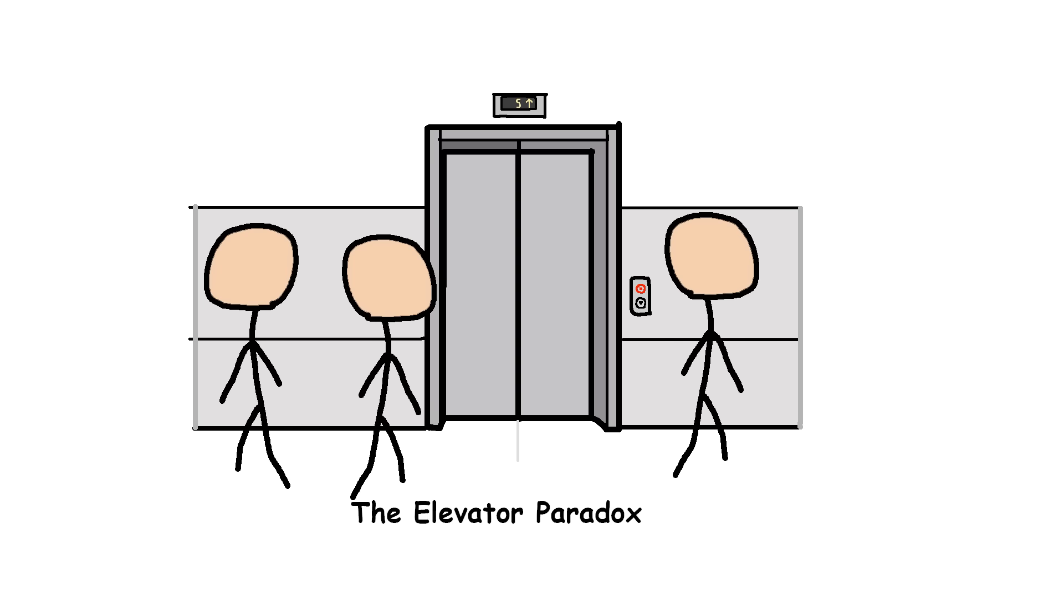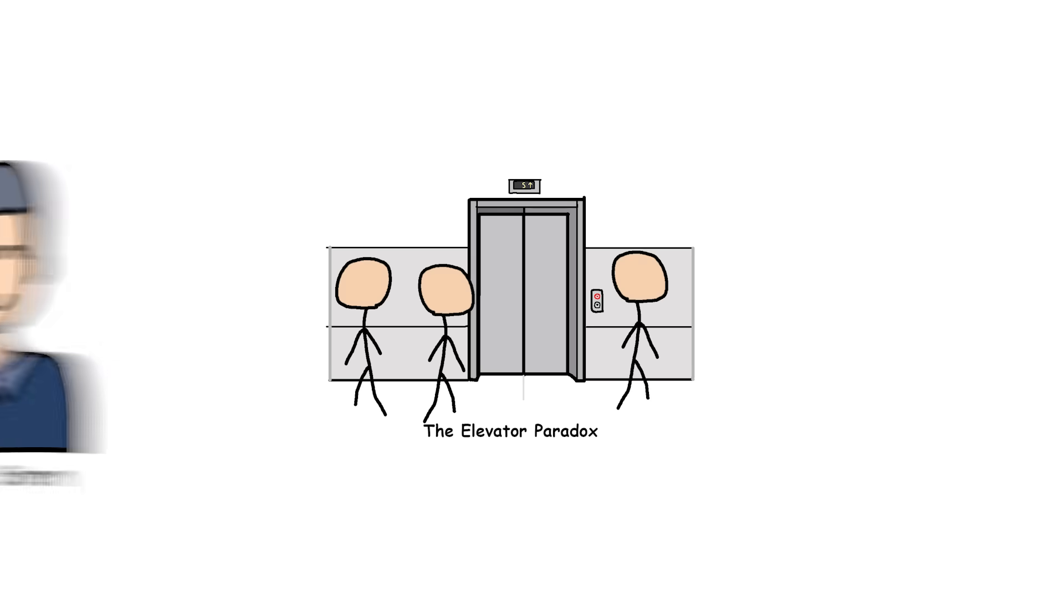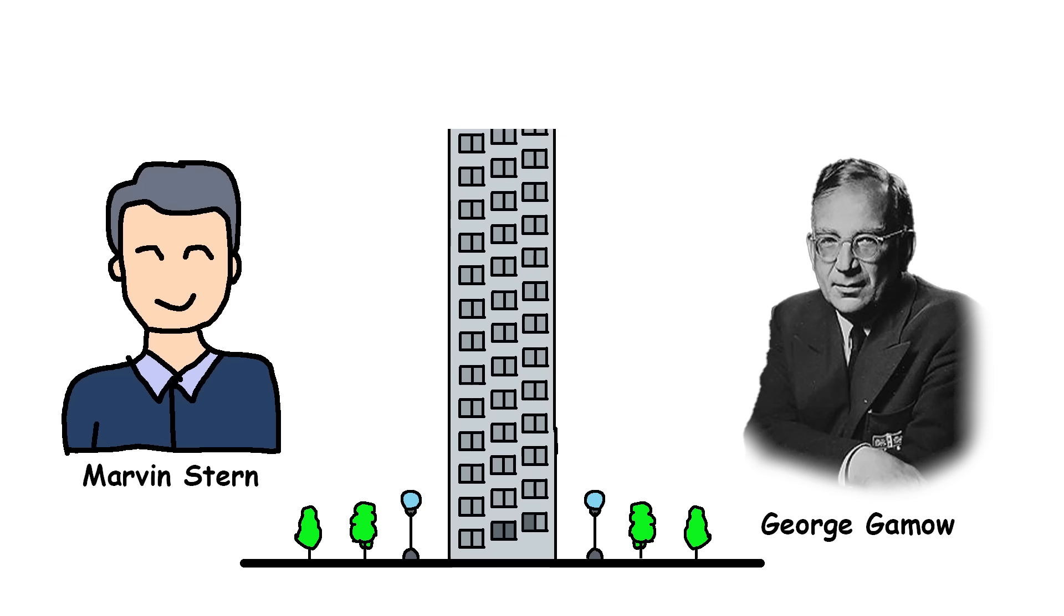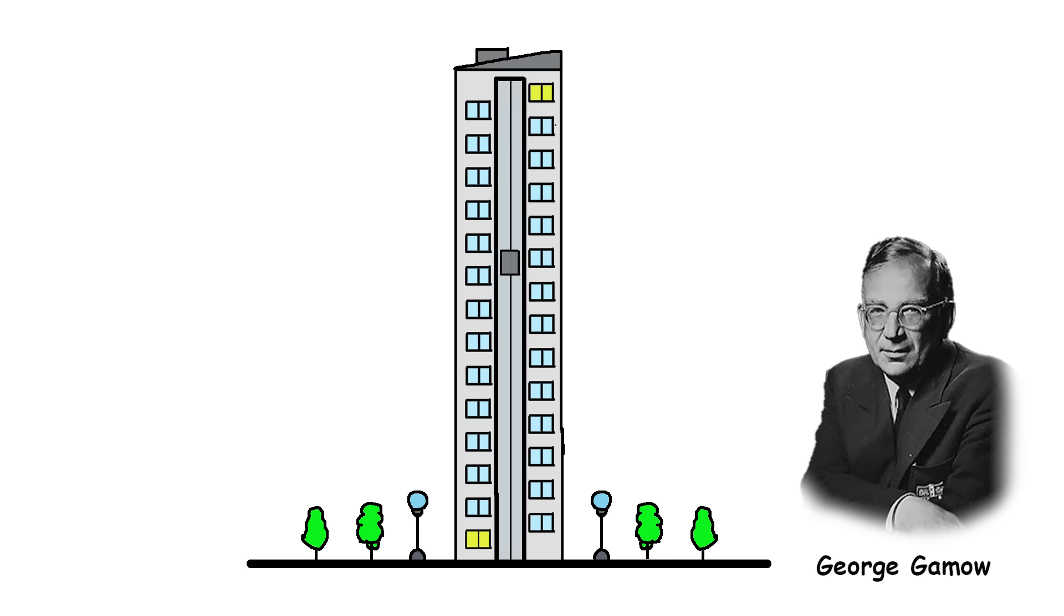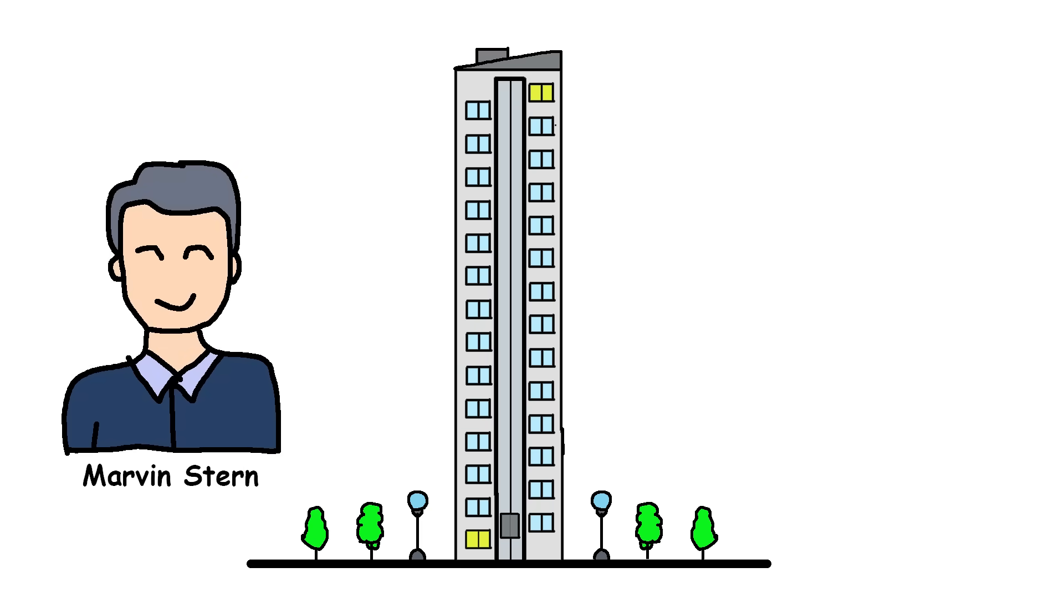The elevator paradox. The elevator paradox is an interesting phenomenon observed by two physicists, Marvin Stern and George Gamow, who worked in a tall building. Gamow noticed that the first elevator to stop at his floor near the bottom was usually going down. Meanwhile, Stern, who worked near the top floor, observed that the first elevator to stop at his floor was usually going up. This seems to suggest that elevators are more likely to be going in one direction depending on which floor you're on, which is a bit confusing at first.